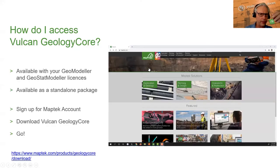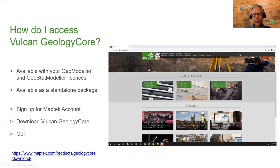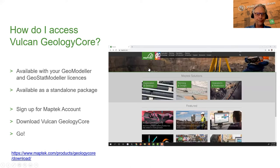The last thing is how do you get access to it. If you've got a maintained GeoModeller or GeoStat Modeller licence, you've got access to it already as part of your maintenance. If you want to start Geology Core, you need to sign up for a MapTech account — a very simple process; you'll already be pre-authorised. Then go to the MapTech account page and download it, or use the download manager on the Workbench, start up Vulcan, go to the Geology menu, hit Geology Core, and follow the prompts. There's nice help and all sorts of wonderful things to guide you, and of course talk to your Vulcan support people if you get stuck.